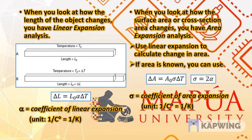For linear expansion, we compare the initial length L₀ and the final length of the object. The change in length is: ΔL = L₀ · α · ΔT, where α is the coefficient of linear expansion. Its unit is per Celsius degree or per Kelvin, and it is a property of the material — each material has its own value of α.